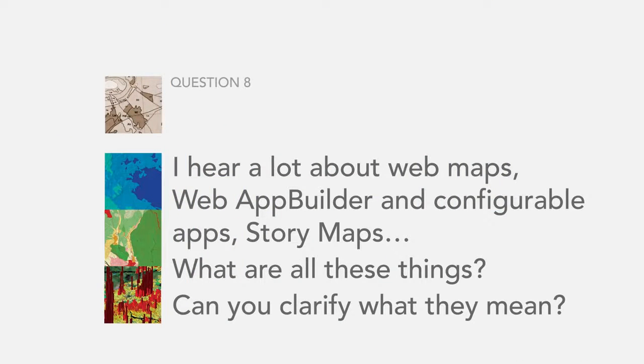The next question is about web maps, App Builder, configurable apps, and story maps. First, a web map is a fundamental building block of ArcGIS — it's a technical specification that all development teams adhere to, enabling maps to be used across a variety of applications and devices. ArcGIS apps like Collector, Operations Dashboard, and Navigator for ArcGIS are task- or workflow-focused, downloadable, and configured within your ArcGIS organization — they're a core part of the ArcGIS platform.